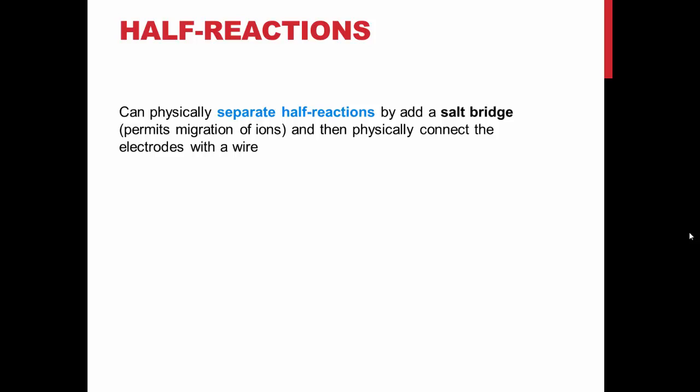In lab, we are able to physically separate the two half-reactions of the cell. The two reactions can be connected with a salt bridge, which allows the migration of ions from one solution to another, and a wire, which will be in the form of a voltmeter, to measure the electron flow between the anode and the cathode.